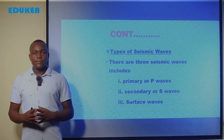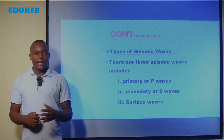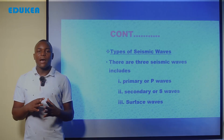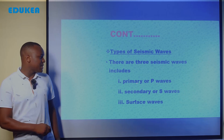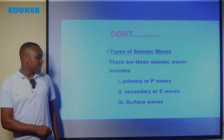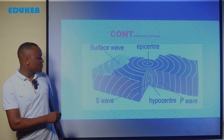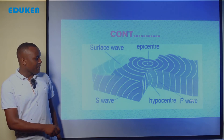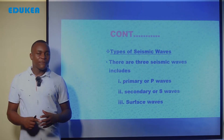Let's see the types of seismic waves. We say there are three types of seismic waves: there is primary or P waves, secondary or S waves, and surface waves. Those are the three types of seismic waves.